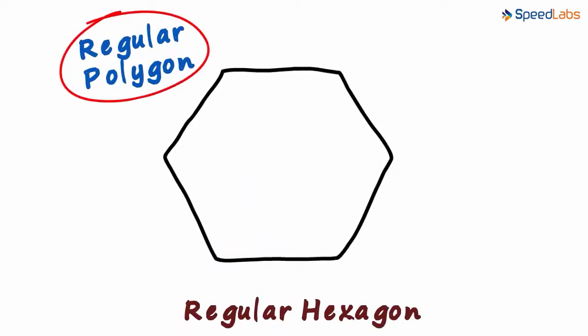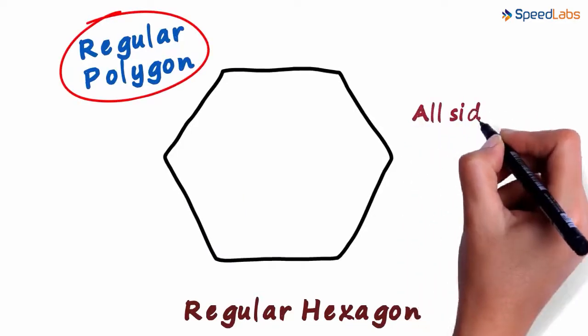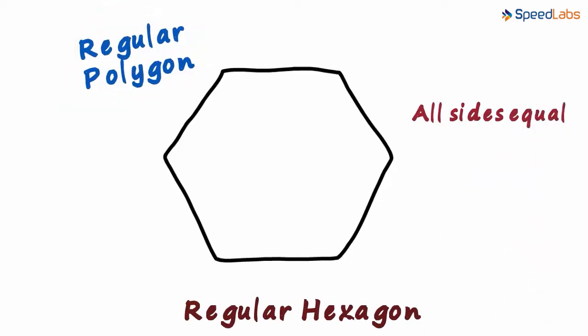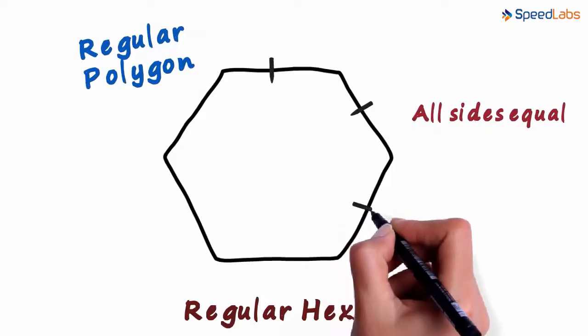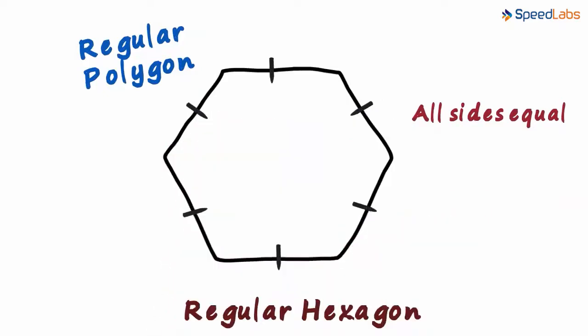A regular polygon is a polygon in which all sides are equal to each other. So in this regular hexagon, each of these six sides will be equal to each other.